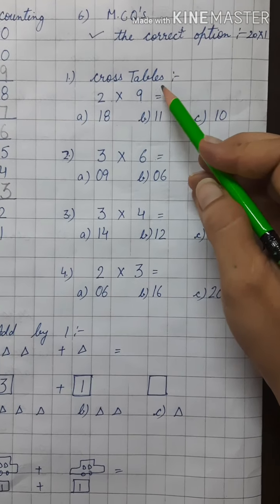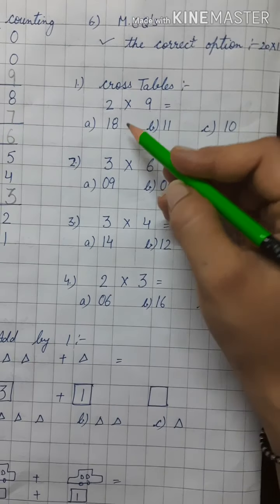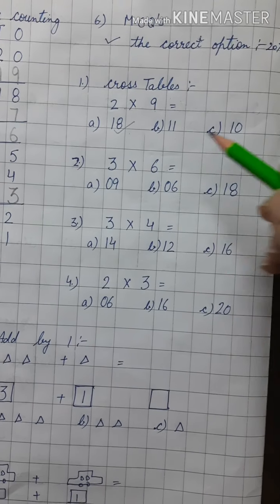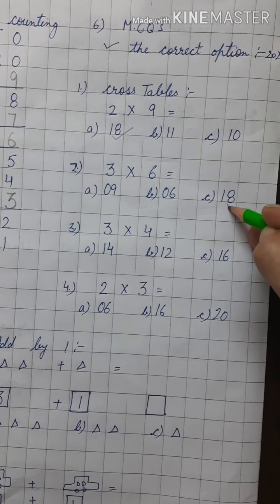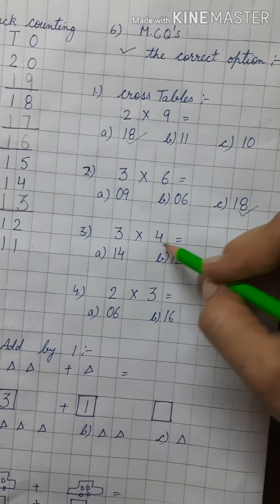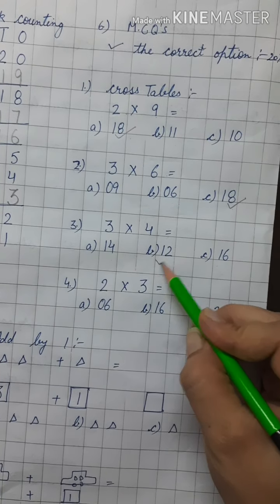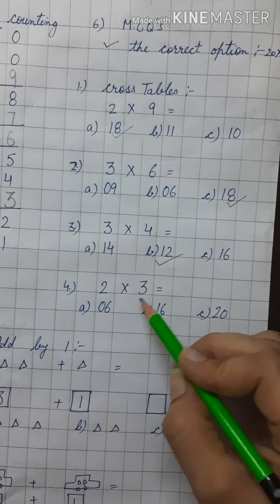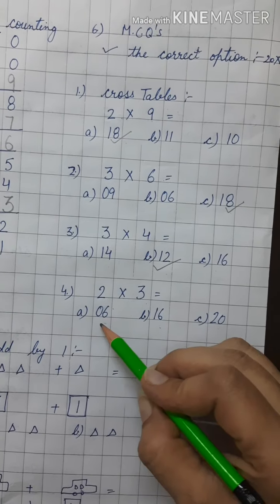So, my first question is cross tables. 2 nines are 18, 11 or 10? It is 18. So, we will tick option A. 3 sixes are 18. So, we will tick the option C. 3 fours are? 14, 12 or 16? 12. 2 threes are 6, 16 or 20? 6.